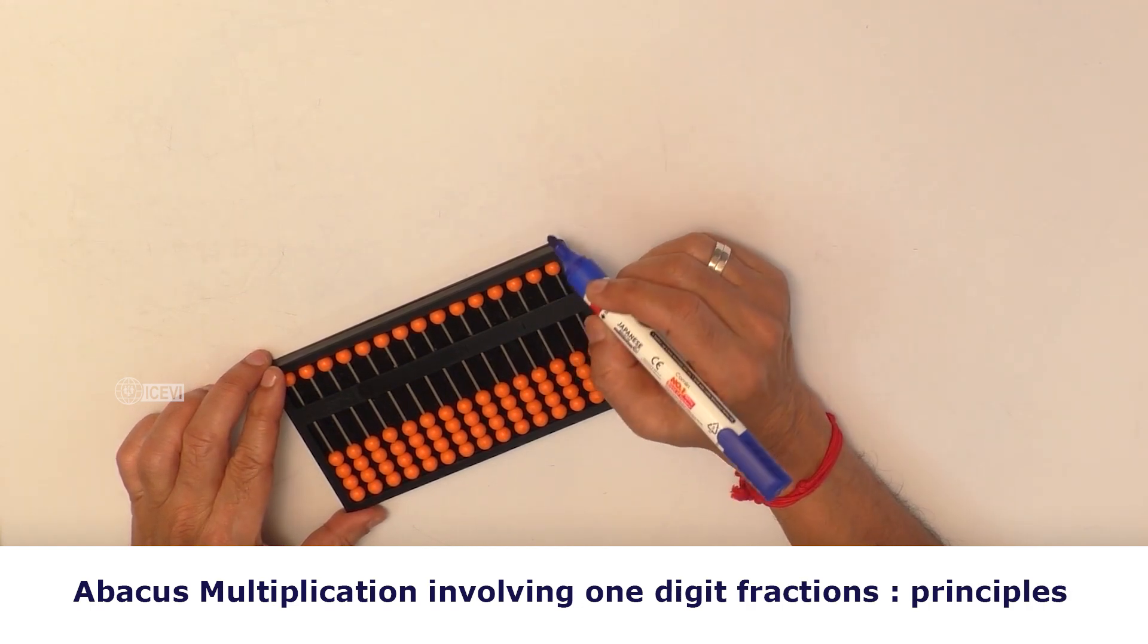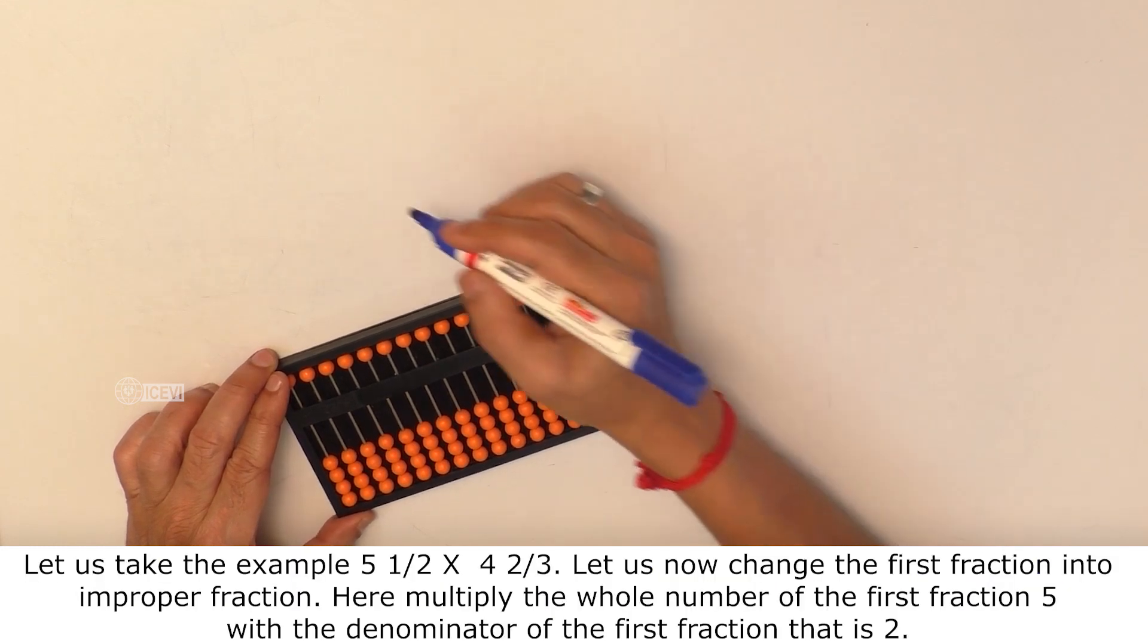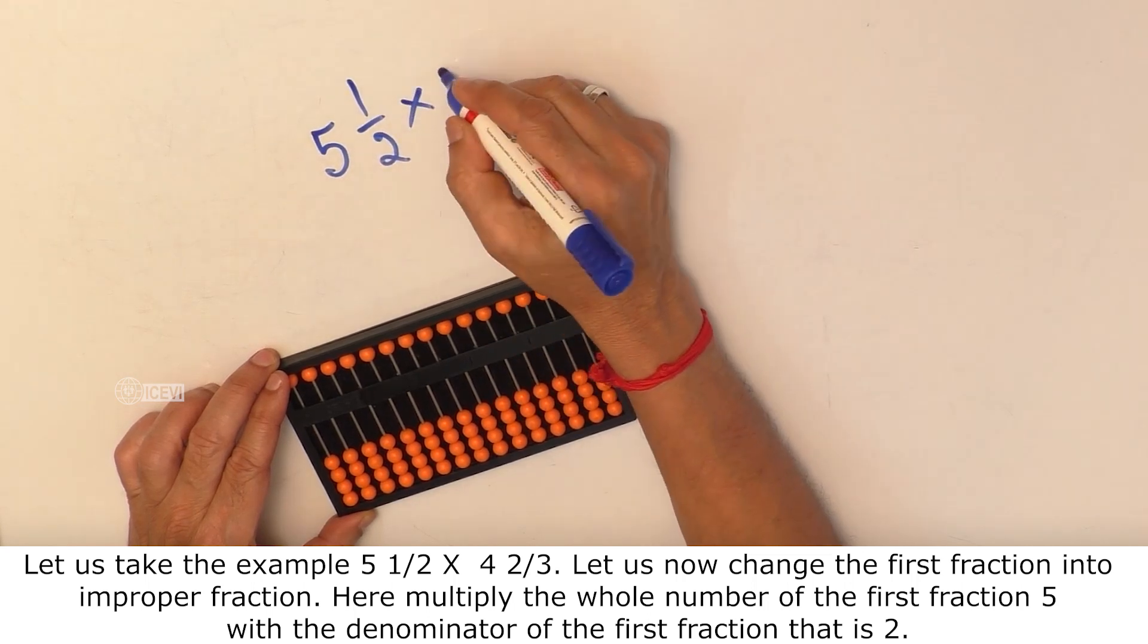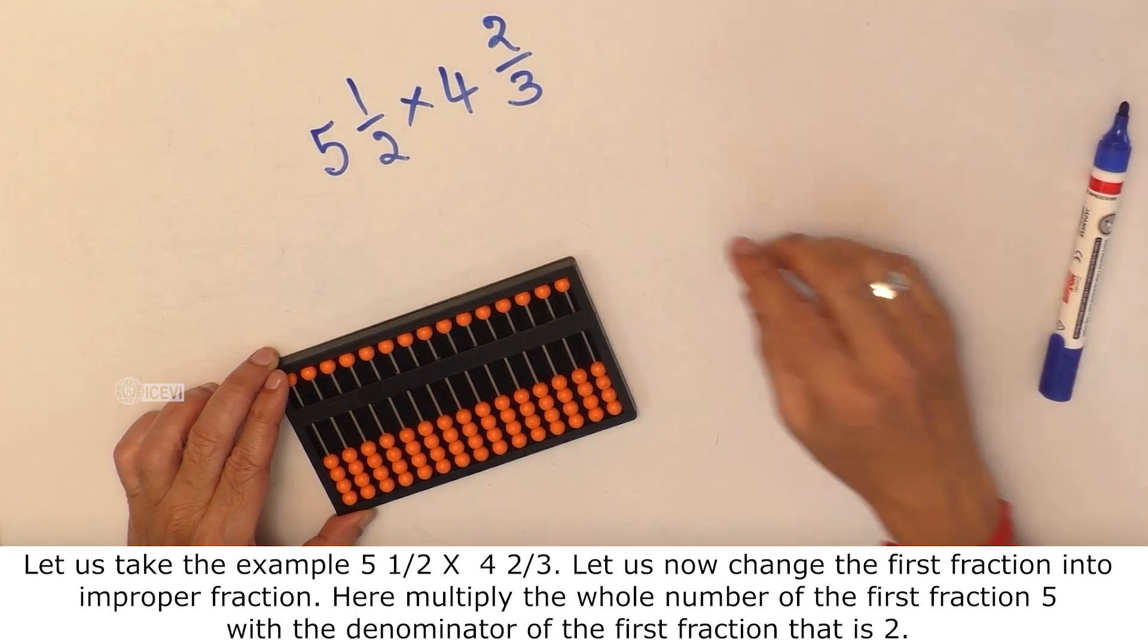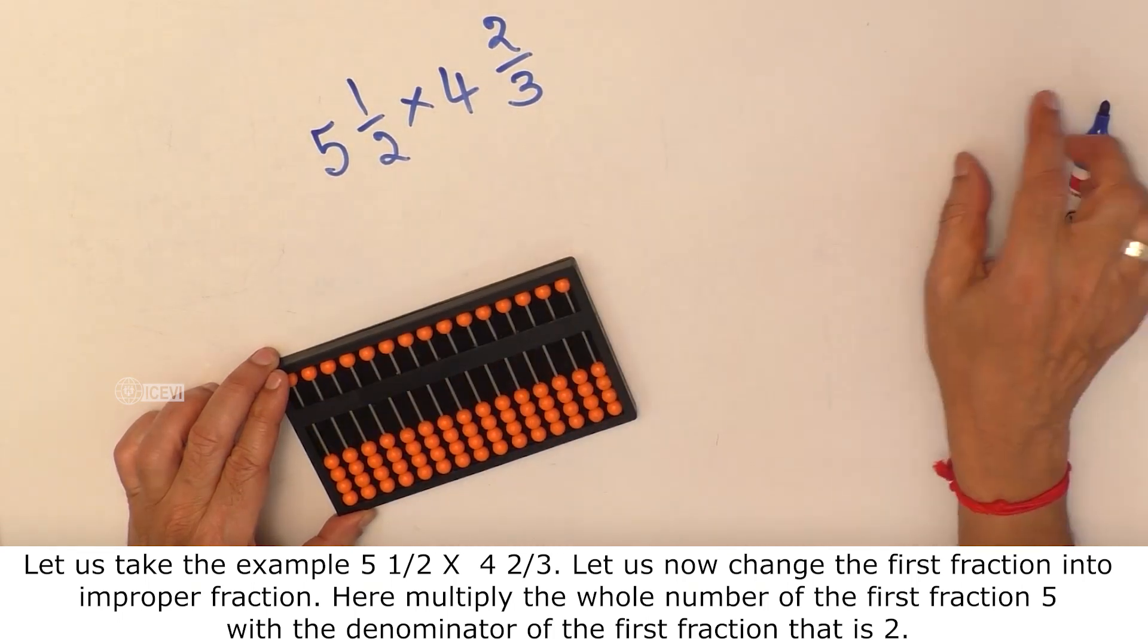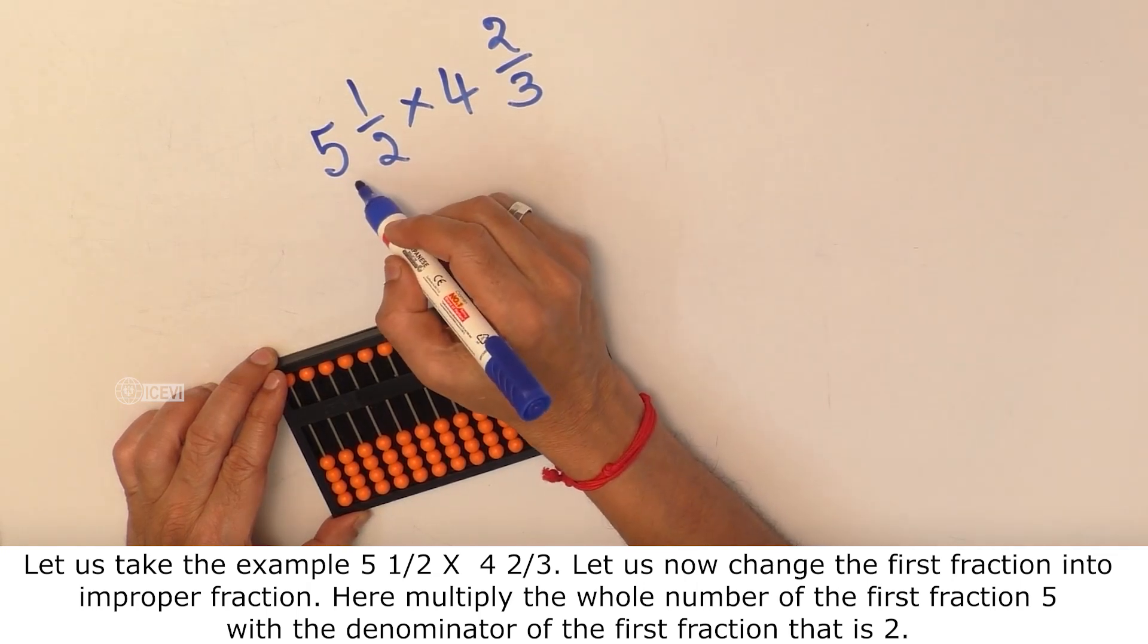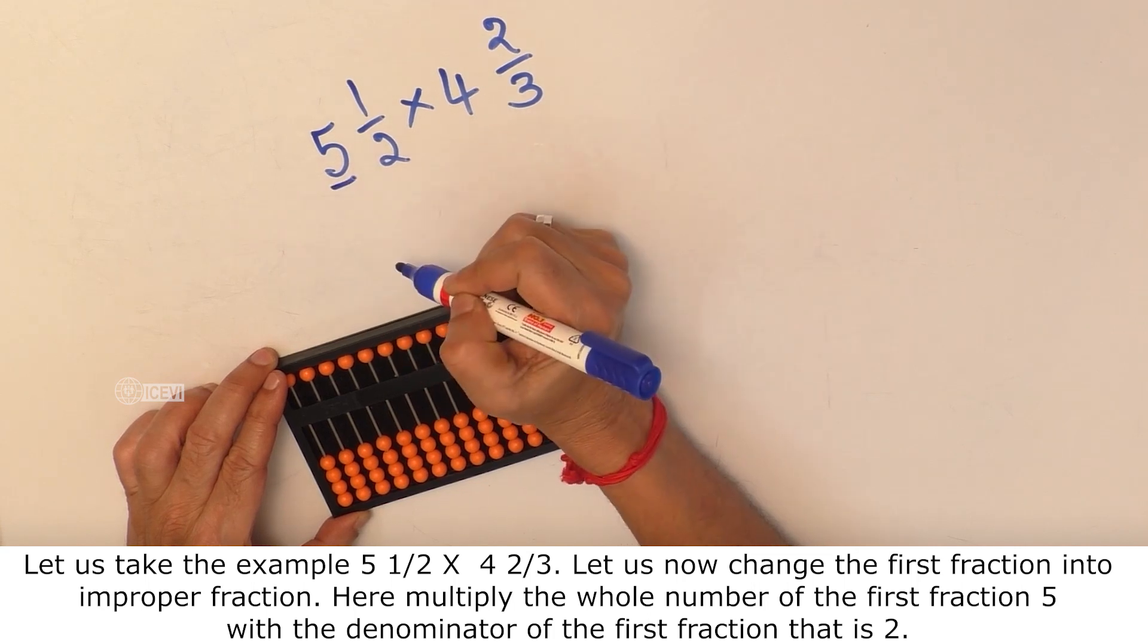Let us take the example 5 1/2 multiplied by 4 2/3. Let us now change the first fraction into improper fraction. Here multiply the whole number of the first fraction 5 with denominator of the first fraction 2. The multiplied value is 10.